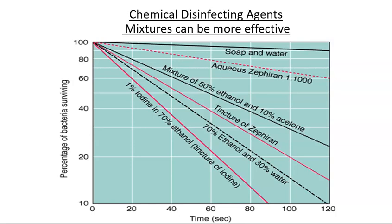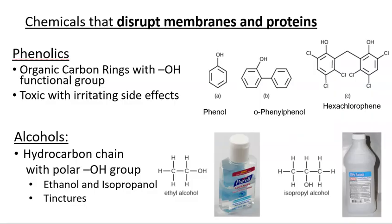We also see synergism with antibiotic cocktails. We'll look at different kinds of chemical disinfecting agents briefly, because they're pretty straightforward in terms of their mode of action. We can group chemicals based on their mode of activity — an easy one is to disrupt membranes or protein structures in cells.